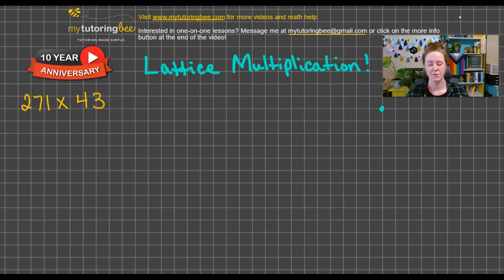Okay, so we're going to work on this multiplication problem, 271 times 43. I chose a three-digit by two-digit number so that I could really show you how to set up our boxes that we're going to use for our Lattice Multiplication.